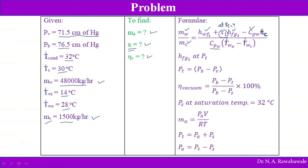The only unknown is X (dryness fraction). Prior to that, we must know total pressure. Total pressure PT equals barometric pressure minus vacuum pressure: absolute pressure = atmospheric pressure minus vacuum pressure. Atmospheric pressure PB and vacuum pressure PV are both given, so total pressure can be obtained.